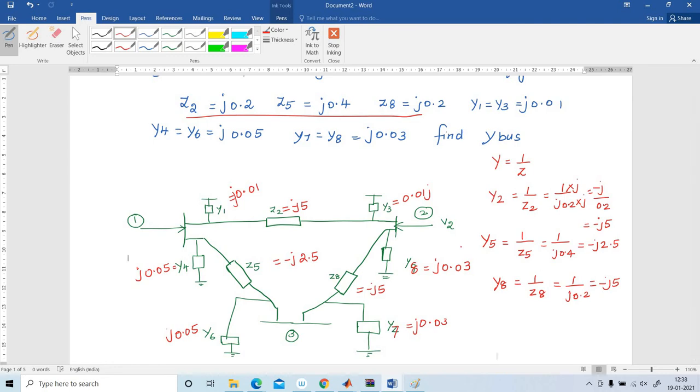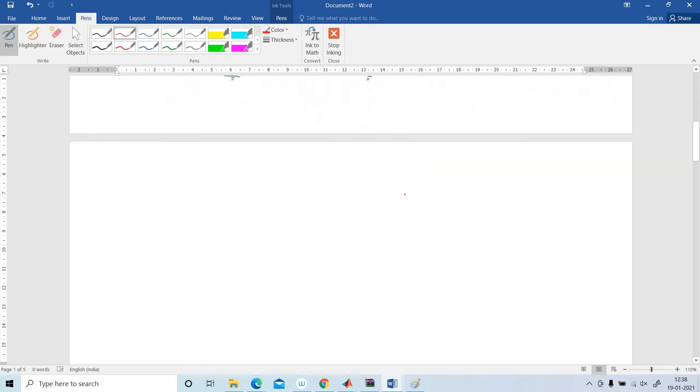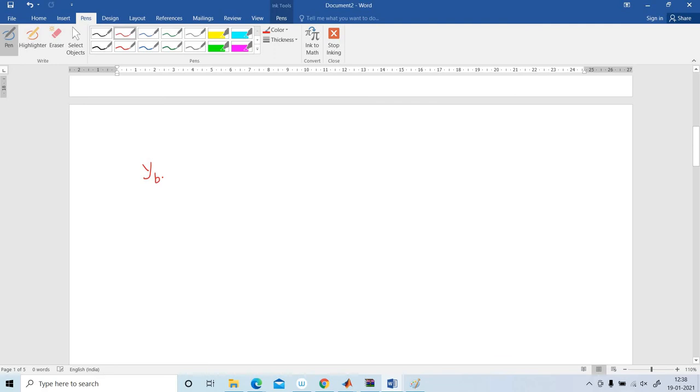I am going to find out Y bus. There are 3 buses: bus number 1, bus number 2, and bus number 3. So corresponding 3 voltages V1, V2 and V3. So I am going to write the Y bus matrix. So 3 buses, the matrix is 3 cross 3 matrix.